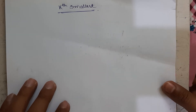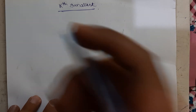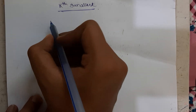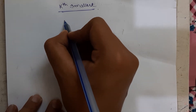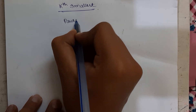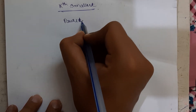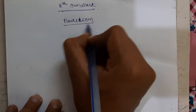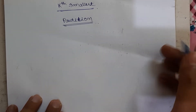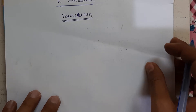For finding the kth smallest element in an optimal solution, we can use a partition algorithm. What does this partition algorithm mean? If you have done quick sort, then you may know this.